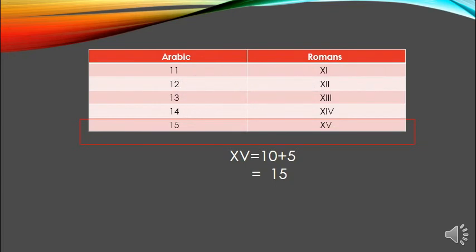15 represents XV because X equals 10 and V equals 5. So add both these two values: 10 plus 5 equals 15.